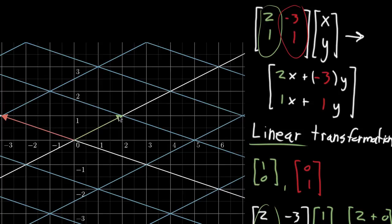And the convenient way to encode that is that the landing spot for that first basis vector, the one that started off one unit to the right, is represented with the first column of the matrix. And the landing spot for the second basis vector, the one that was pointing one unit up, is encoded with that second column.